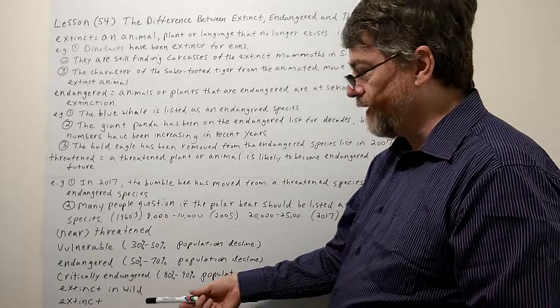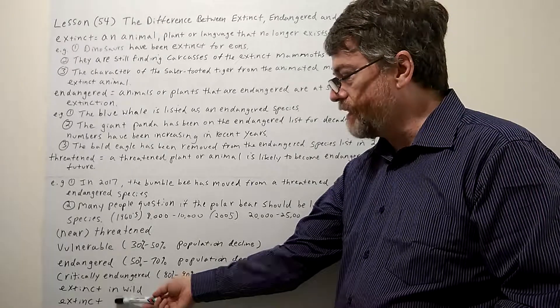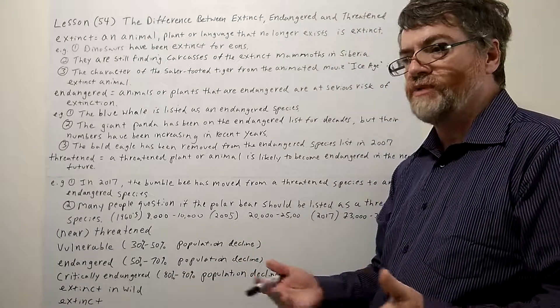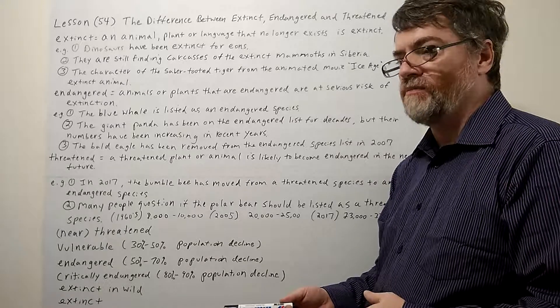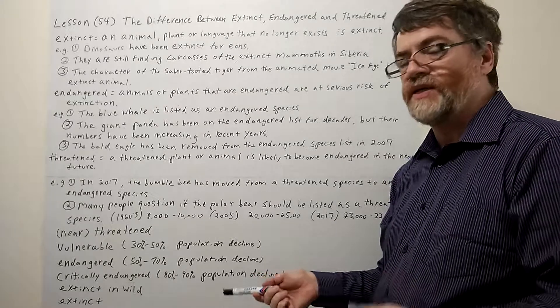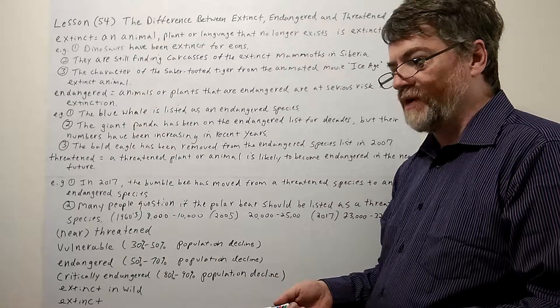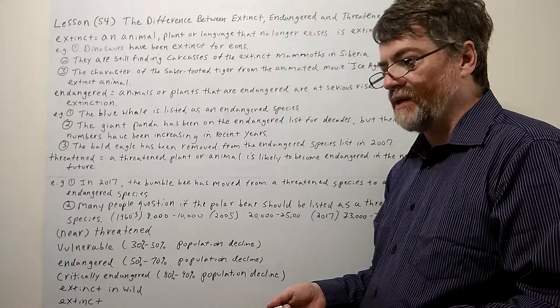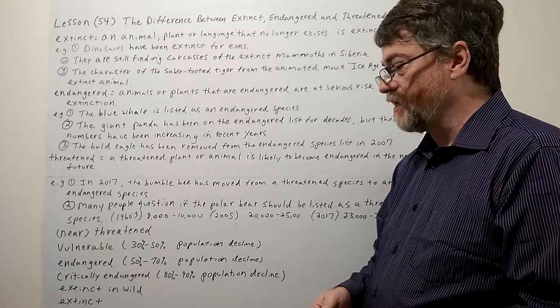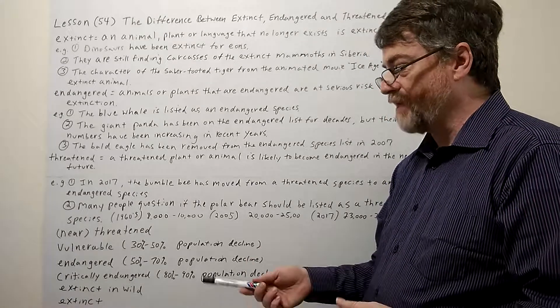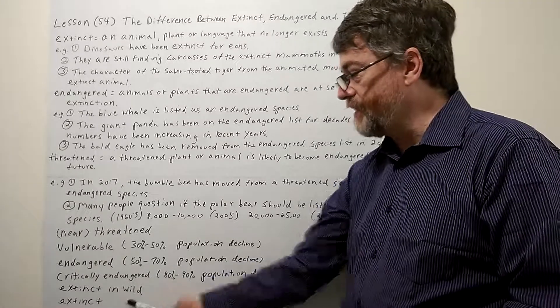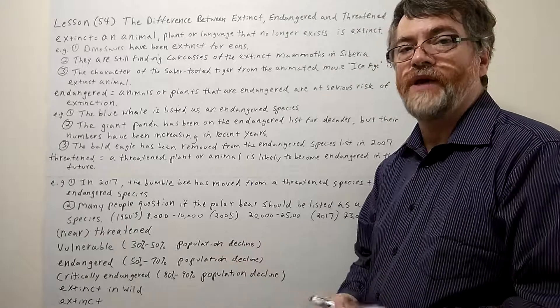And then we also have another category here: extinct in wild. That would mean in the wild there's just about zero left, but we do have some maybe in some zoos, there might be still some specimens left of this animal, or in some very protected habitats or reserves, animal reserves maybe are holding some. And so they're not technically really in the wild. And of course extinct is easy - extinct means they're gone, zero, no more left.